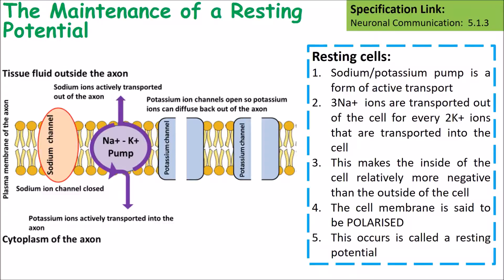To get back to a resting state, the sodium-potassium pump is a form of active transport. It actively transports sodium ions out of the axon and potassium ions into the cytoplasm of the axon. Three sodium ions are transported out of the cell for every two potassium ions that are transported into the cell. This makes the inside of the cell relatively more negative than the outside, and the cell membrane is said to be polarized. When this occurs it is called its resting state or resting potential.